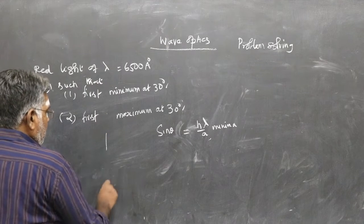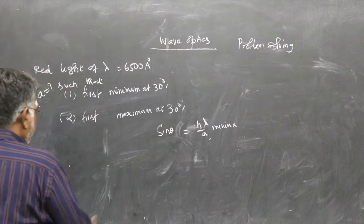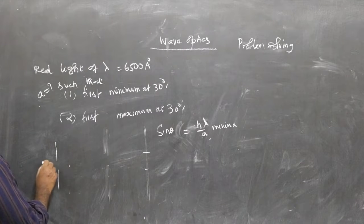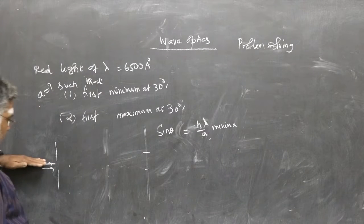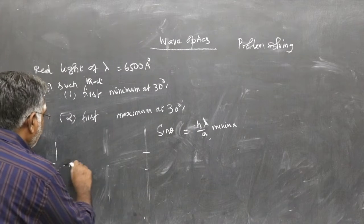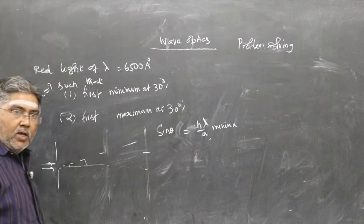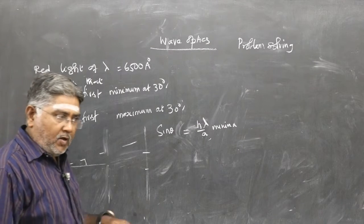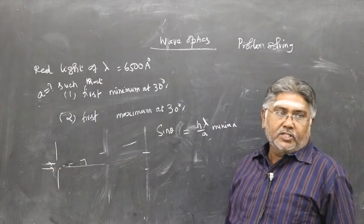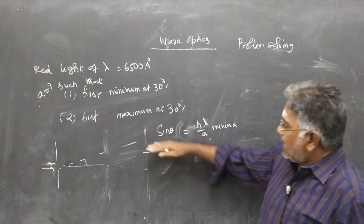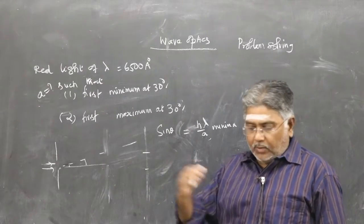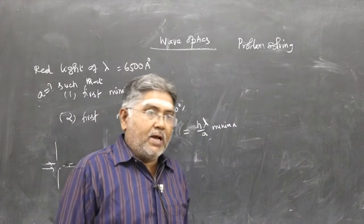What is this theta about? In single slit diffraction — I will draw here — you have a screen with central maximum and light comes in. The angle theta is measured with respect to the initial direction of light. As you go higher on either side, theta varies and you observe various secondary maxima and minima.